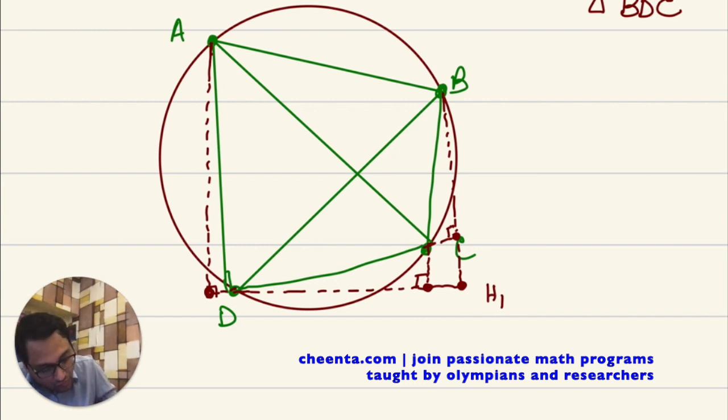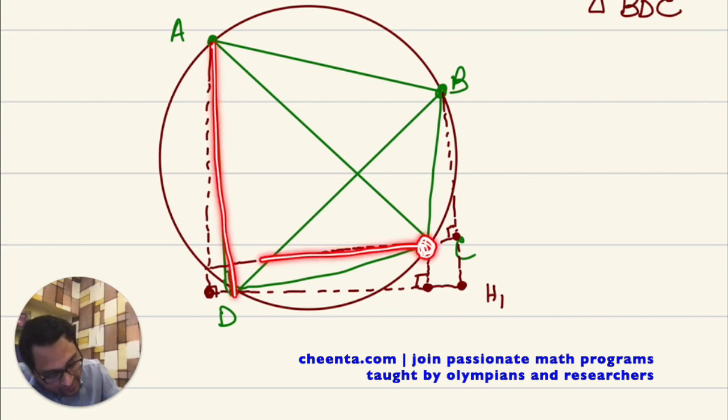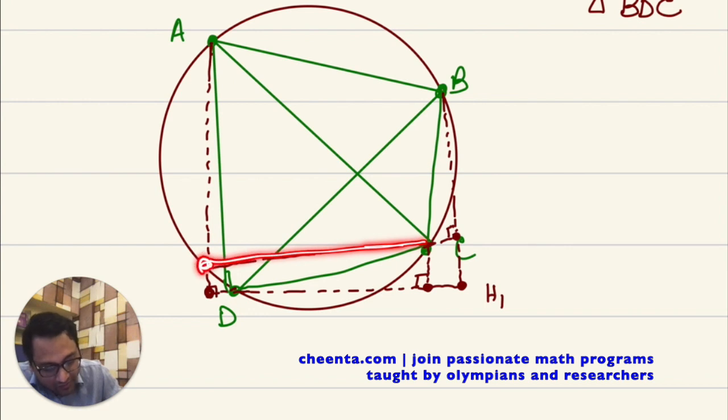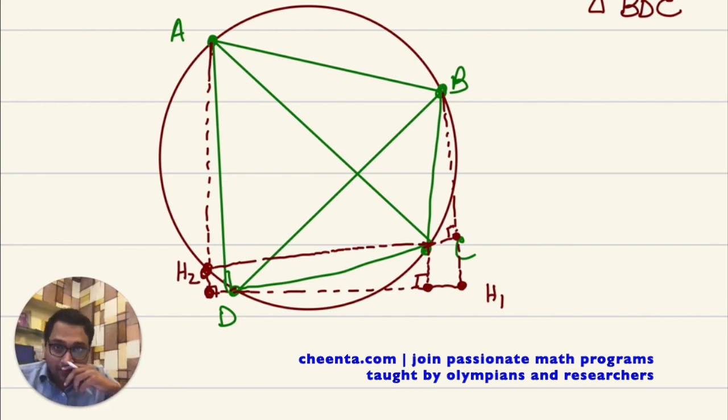And I will draw the perpendicular here on DA, perpendicular on DA from the point C like this. This looks like a more familiar perpendicular. And I'll extend the altitude to meet the other altitude. So this is the point H2. This is the point H2. It looks like H2 is on the circle. It might not be on the circle. Okay.